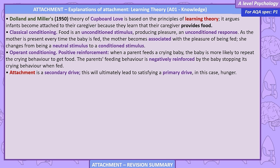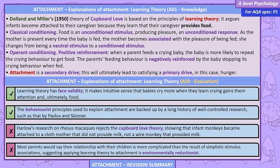Attachment is a secondary drive, which will ultimately lead to satisfying a primary drive — in this case, hunger. Learning theory has face validity; it makes intuitive sense that babies cry more when they learn crying gains them attention and ultimately food. The behaviourist principles used to explain attachment are backed up by a long history of well-controlled research, such as that by Pavlov and Skinner. However, Harlow's research on rhesus macaques rejects cupboard love theory, showing infant monkeys become attached to a cloth mother that did not provide milk.